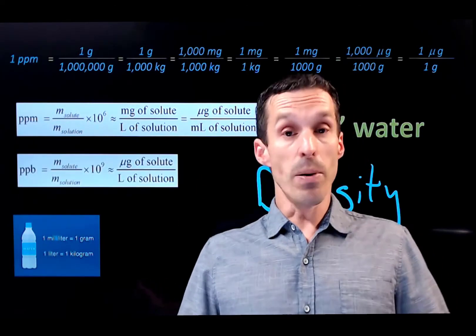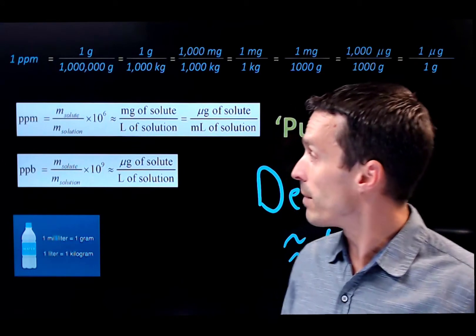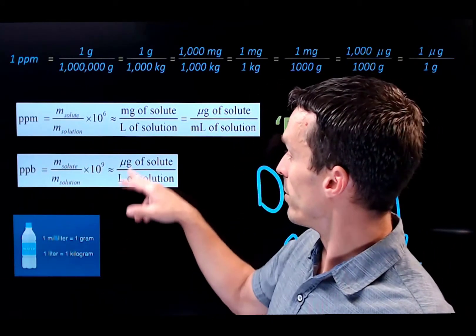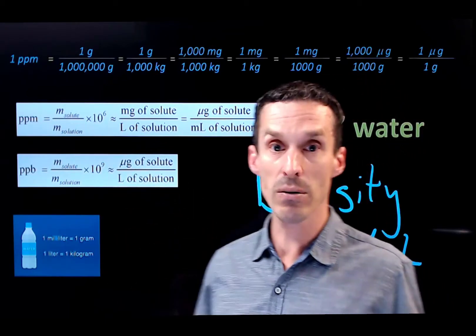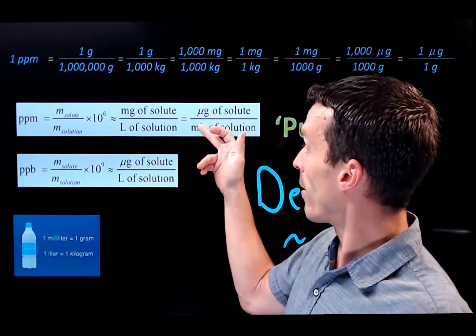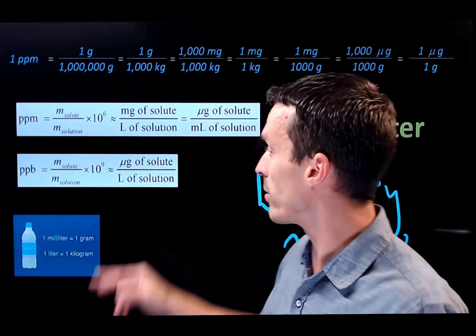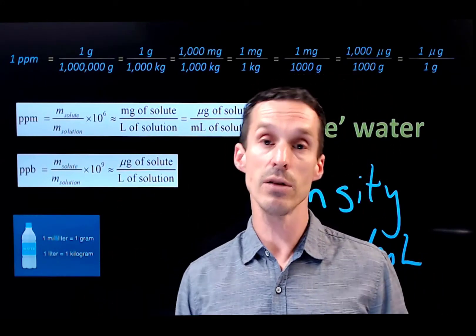Likewise, we can do parts per billion. So instead of multiplying by 10 to the 6 for a million, we multiply by 10 to the 9. And if you wanted to express different units, you could say it's micrograms per liter, right? So micrograms per mL, we just bring that up by a factor of a thousand. You could go on.